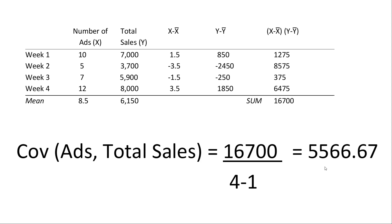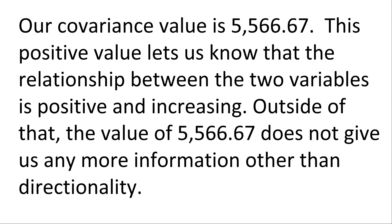This gives me a covariance value of 5,566.67. Again, I see that value and think — what does that even mean? Is it interpretable? The only thing that value really tells us is that the relationship between those two variables is positive and increasing. It's pretty strong — that's a big number — but that's it. Does it tell me anything about how strong it is? No, not really. Outside of telling us it's positive and moving in that direction, covariance doesn't give us much more than directionality.